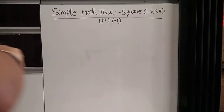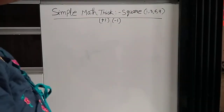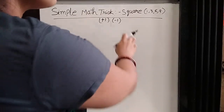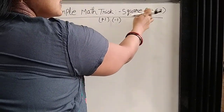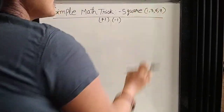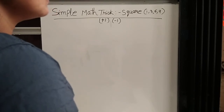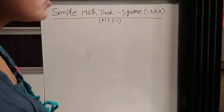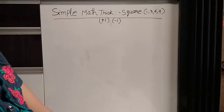Hello friends. Today we are going to learn how to find the square value of 1369 by using a simple matrix without using any calculator. How can you solve it within few seconds.